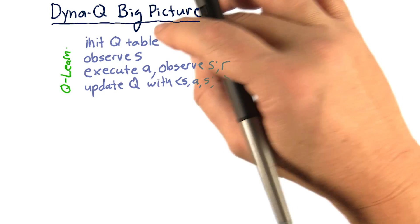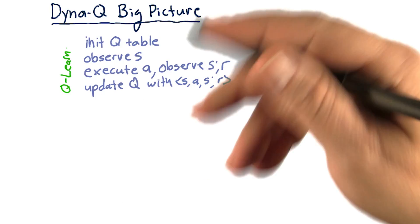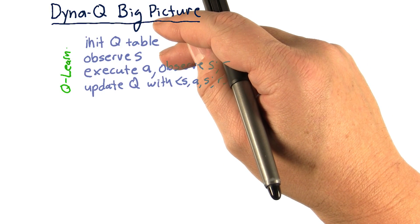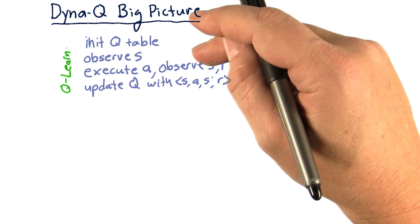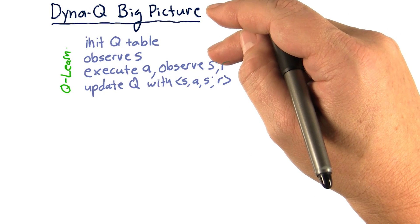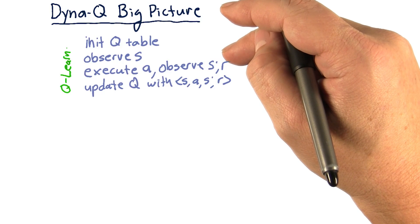So we initialize our Q-table, and then we begin iterating. We observe S, we execute action A, and then we observe our new state, S prime, and our reward, R.